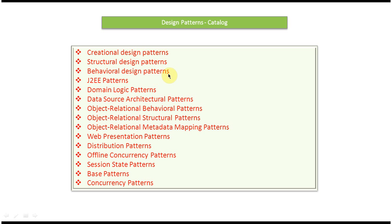Under each category there are a lot of patterns — around 50 plus design patterns in total across Java and enterprise application design patterns. I have created videos for each and every pattern. Please log into my channel and watch those videos. In the next video tutorial I covered under the creational design patterns what all patterns are there.